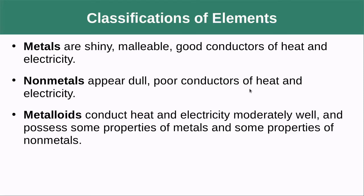Metals are shiny, malleable, and good conductors of heat and electricity. Non-metals appear dull and are poor conductors of heat and electricity. Metalloids have properties somewhere in between — they conduct heat and electricity moderately well and possess some properties of both metals and non-metals.